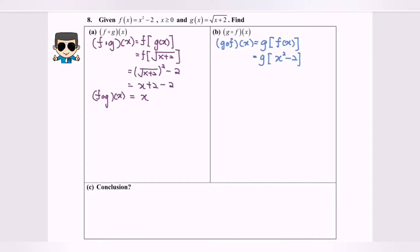Next I'm going to substitute the function f(x) into g(x), so we will have square root of x squared minus 2 plus 2. Next I'm going to simplify: x squared minus 2 plus 2, and we will have square root of x squared. So g composed with f will be equal to x.